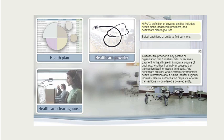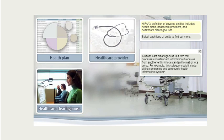A health care provider is any person or organization that furnishes, bills, or receives payment for health care in its normal course of business, whether it actually processes the transaction itself or uses a third party. Any health care provider who electronically transmits health information about claims, benefit eligibility inquiries, referral authorization requests, or other transactions is considered a covered entity. A health care clearinghouse is a firm that processes non-standard information it receives from another entity into a standard format, or vice versa — for example, billing companies and community health information systems.